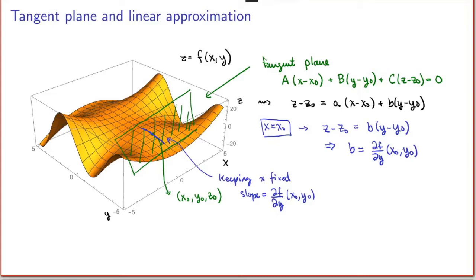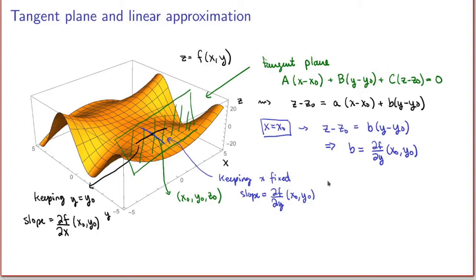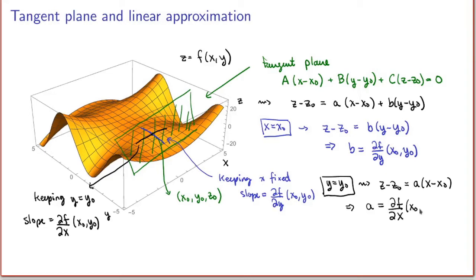Similarly, I can do the exact same thing by keeping y fixed. If I look at the curve obtained by keeping y equals y₀, then the slope is equal to the partial derivative of the function with respect to x evaluated at the point. Setting y equals y₀ in the equation of the tangent plane gives z minus z₀ equals a times (x minus x₀), and the statement that the slope equals the partial derivative means a equals ∂f/∂x evaluated at (x₀, y₀).